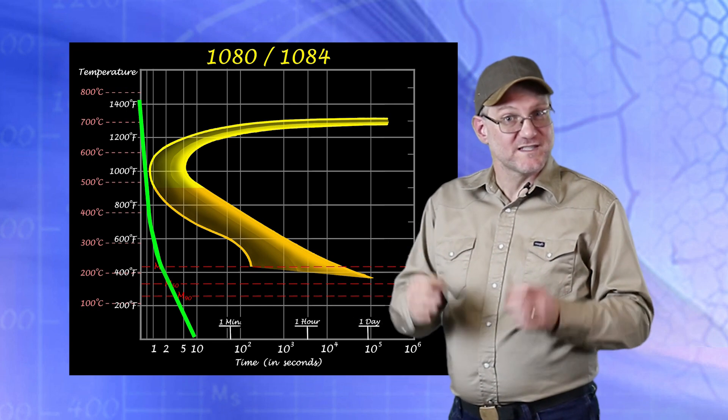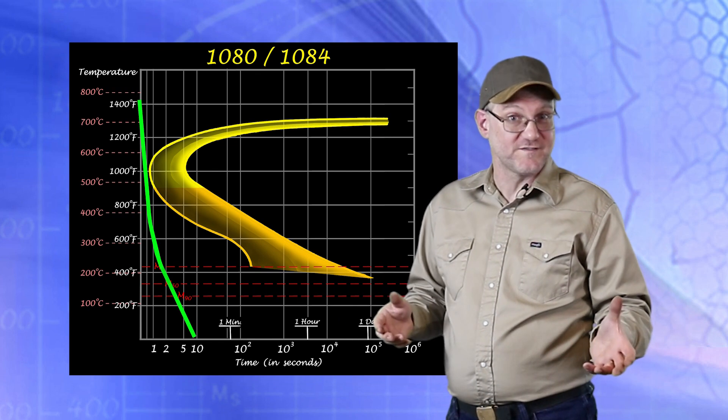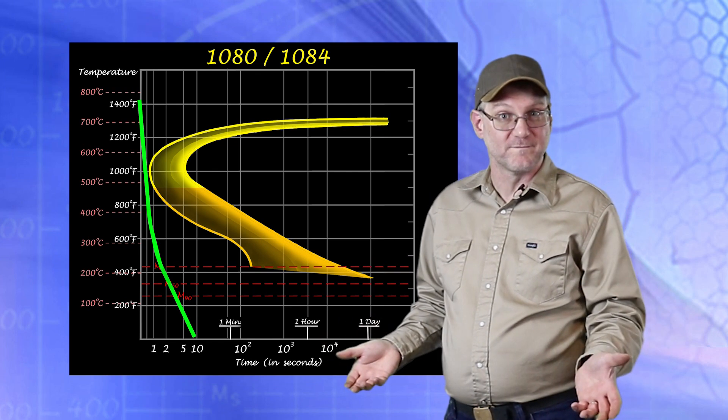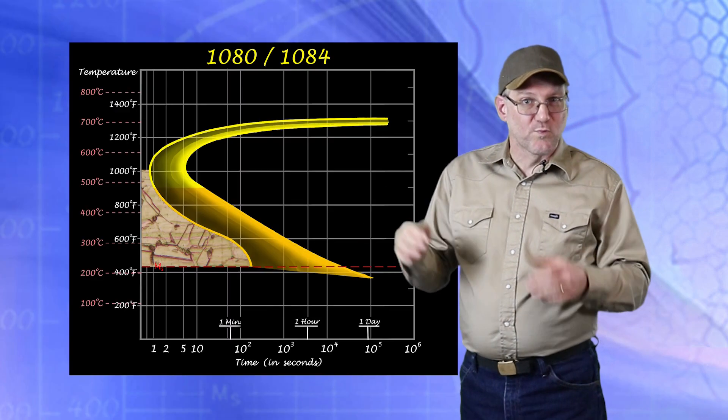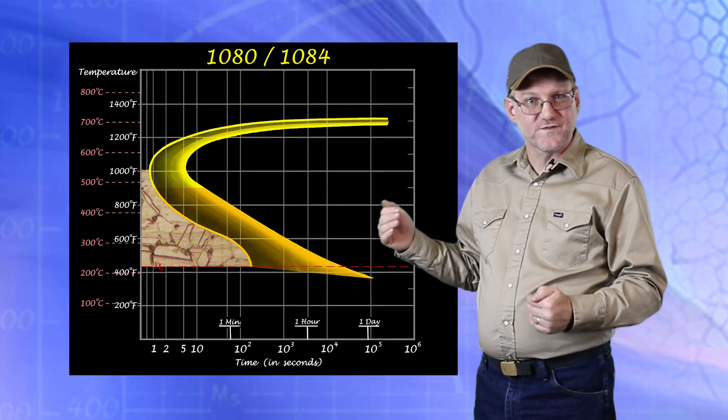So the key to hardening our steel is to simply cool at a rate fast enough to keep any perlite from forming. Below this point, you will notice that the austenite zone gets a little more breathing room as the times for other transformations become longer.